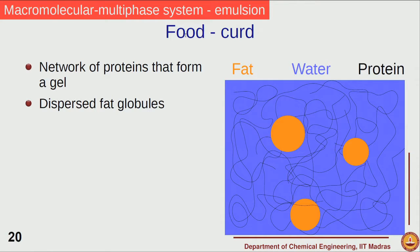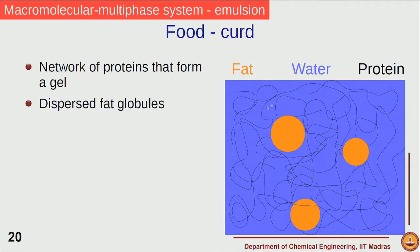The first example we look at is curd — a solid-like material we would like to be less runny when consumed for a good feel of richness and texture. Curd is formed by a network of proteins, specifically casein, which comes from milk. Milk also contains fat and water, so in curd we have a network of proteins giving the gel-like, solid-like structure, with fat globules entrapped and an overall aqueous medium. The curdling process is basically the formation of the protein network and the entrapment of fat globules in a continuous medium of water.